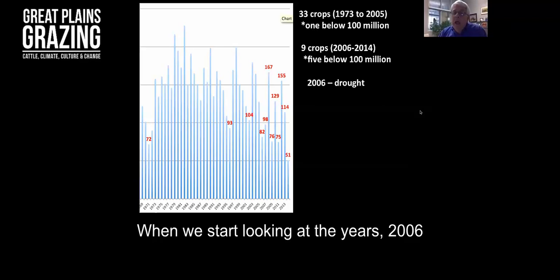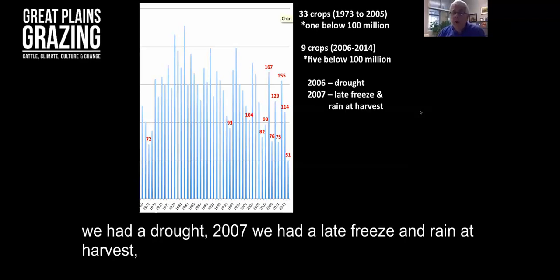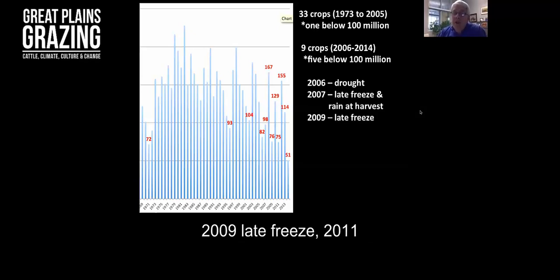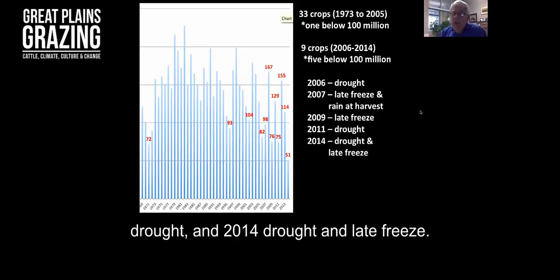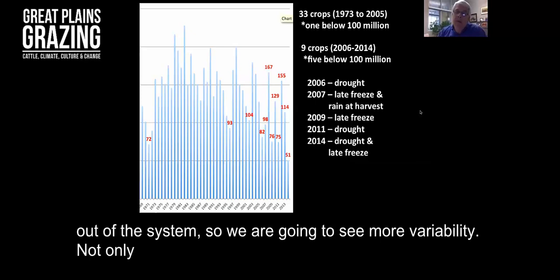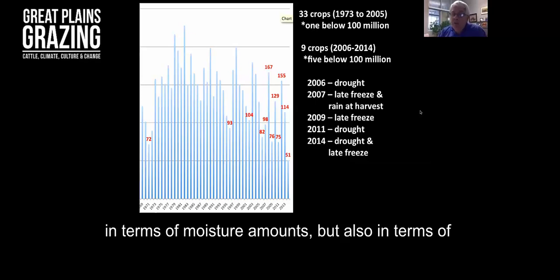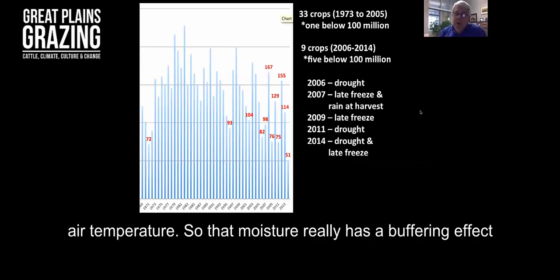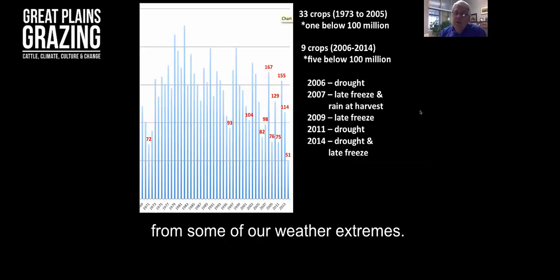When we start looking at the years, 2006 we had a drought, 2007 late freeze and rain at harvest, 2009 late freeze, 2011 drought, and 2014 drought and late freeze. One of the things about a drought is that it takes water out of the system. So we are going to see more variability, not only in terms of moisture amounts, but also in terms of air temperature. That moisture really has a buffering effect from some of our weather extremes.